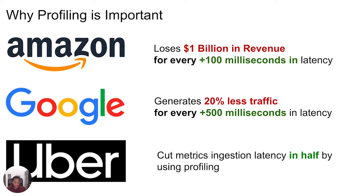Similarly, Uber has on their blog talked about using profiling and flame graphs to cut their metrics ingestion latency by half. That was simply by using profiling and being able to see exactly where their program was spending time and how they could improve it — basically finding the low-hanging fruit.